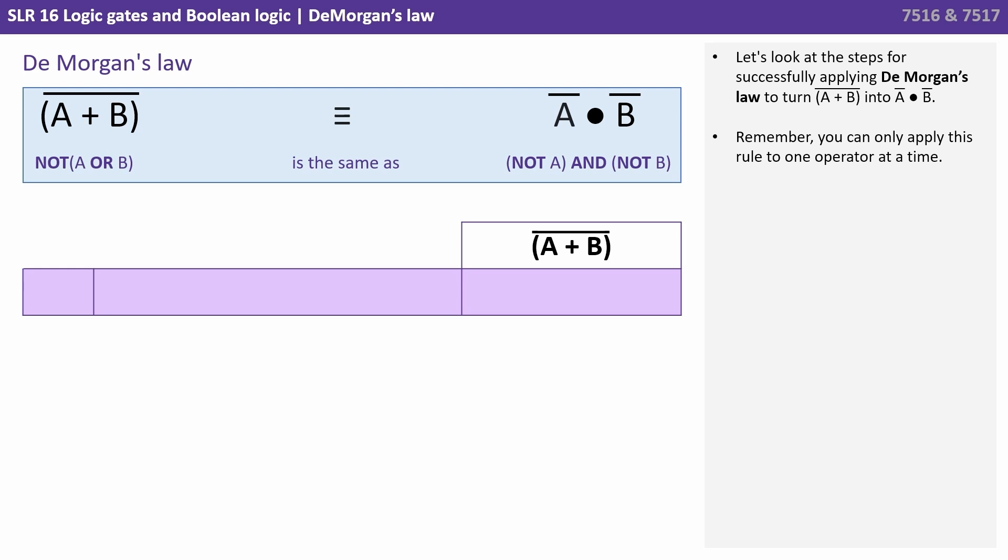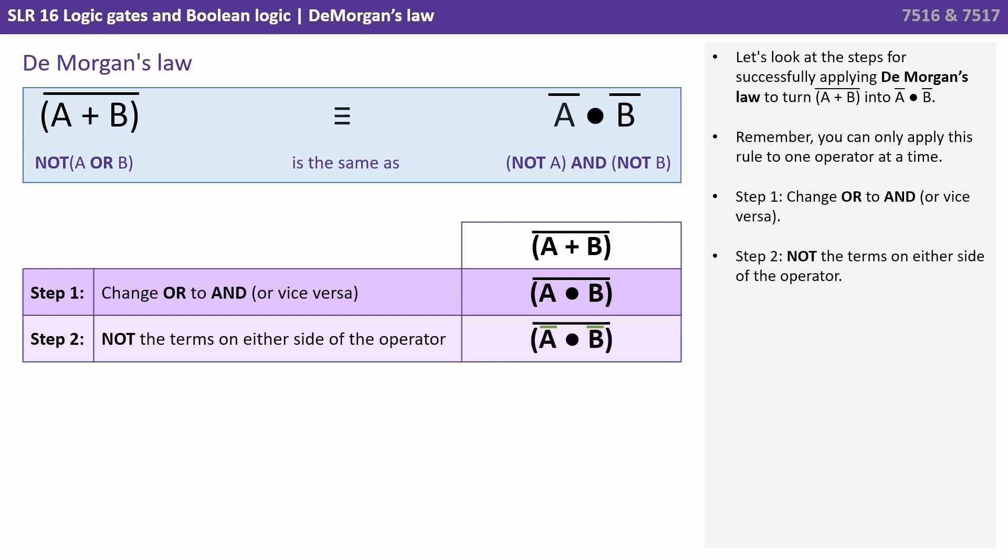Let's look at the steps for successfully applying De Morgan's law to turn NOT A or B into NOT A and NOT B. Remember, you can only apply this rule to one operator at a time. So step one, we change OR to AND or vice versa. Step two, we NOT the terms on either side of the operator. Step three, we NOT everything that has changed.